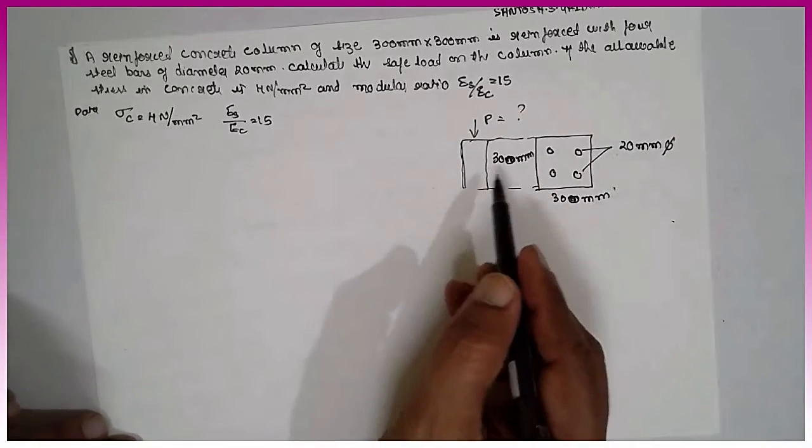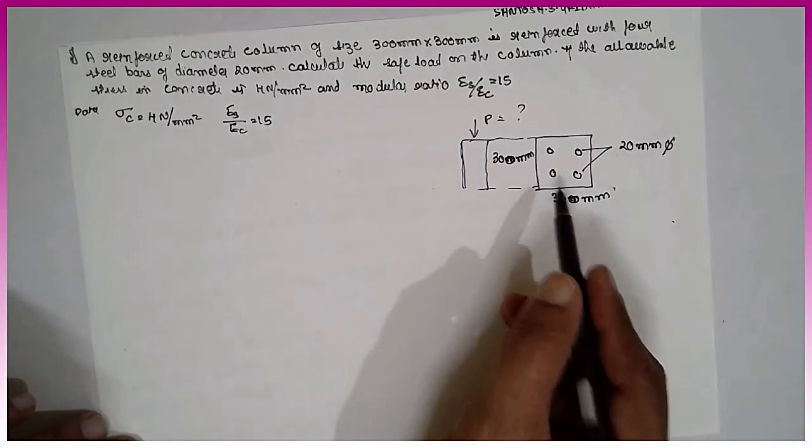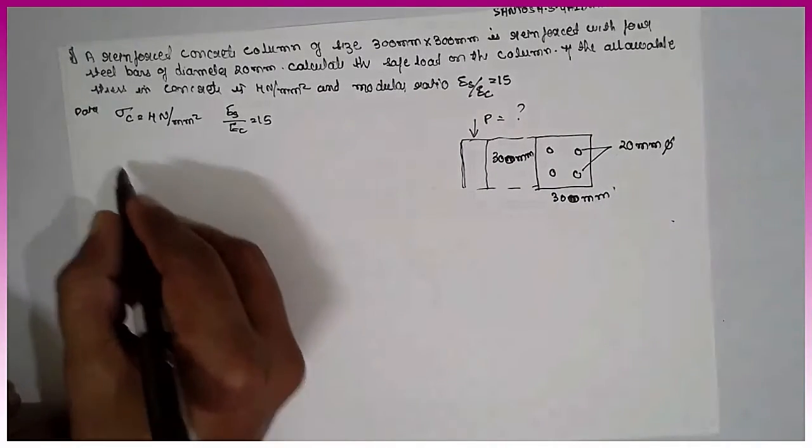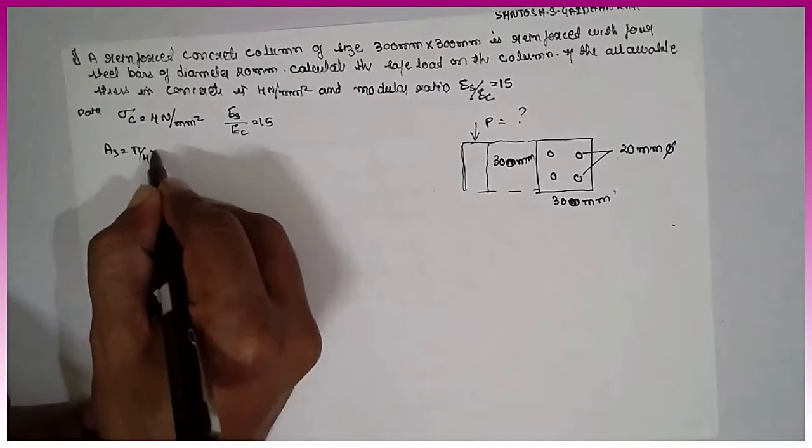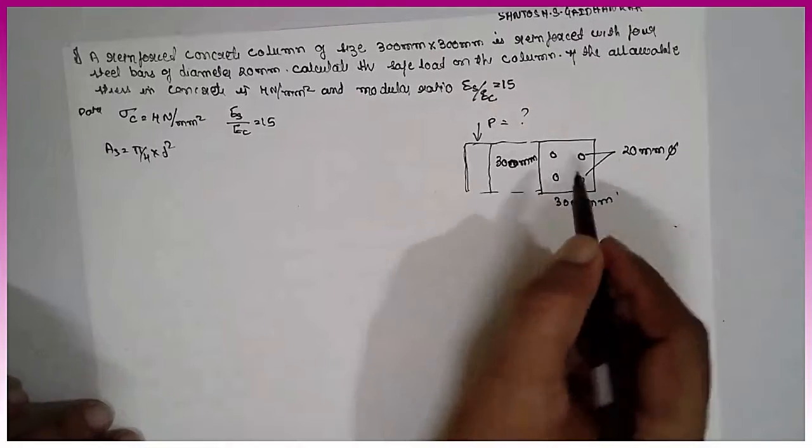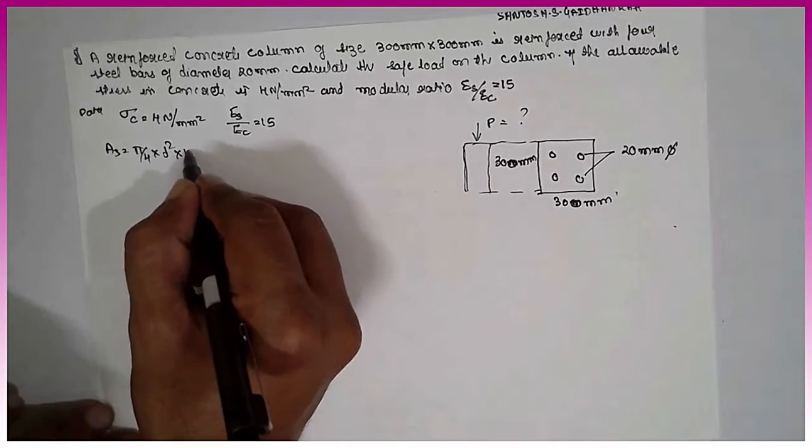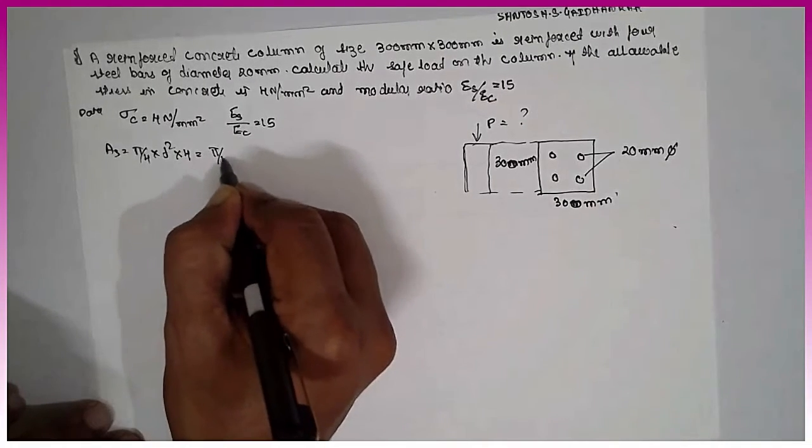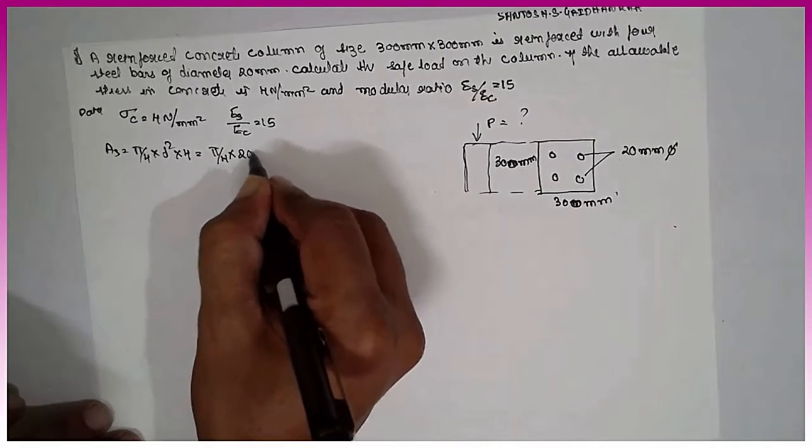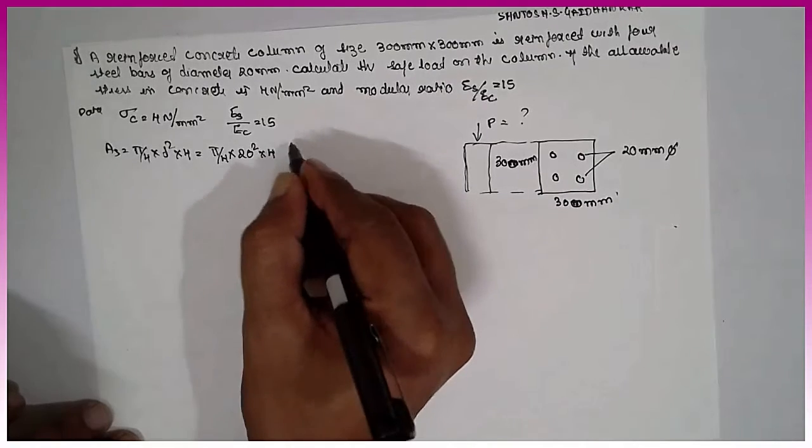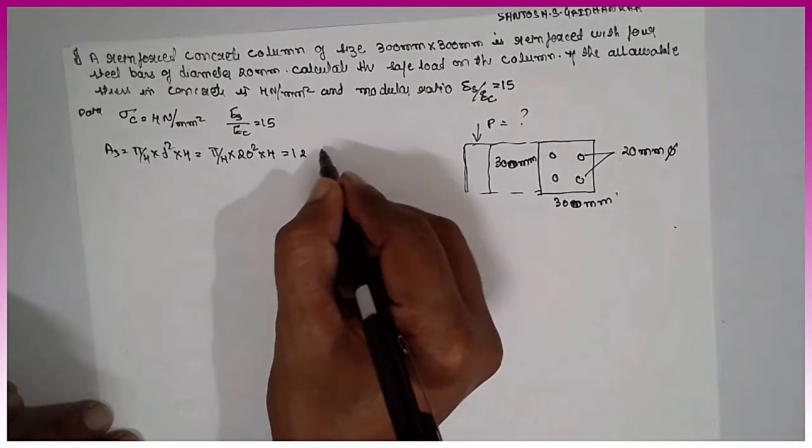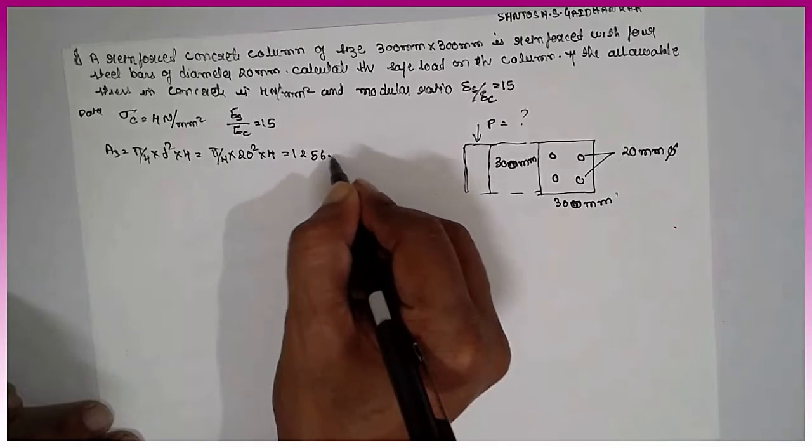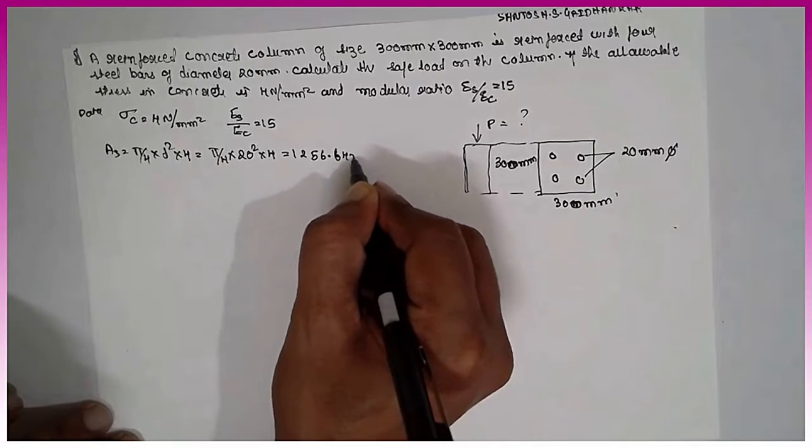First, I am going to calculate the area of the steel. Area of steel, As is equal to pi by 4 into d square. There are 4 steel, therefore I have to multiply by 4. Pi by 4 into diameter 20 square into 4. The answer is 1256.64 mm square.